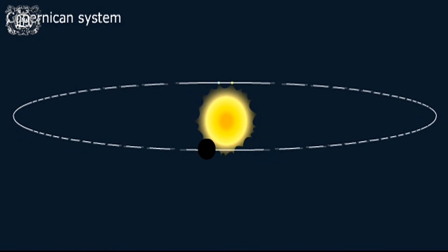The discovery of the phases of Venus reinforced Galileo's conviction of the truth of the Copernican system.